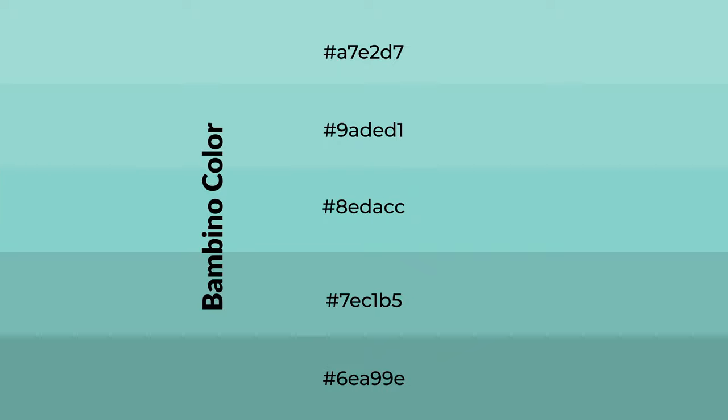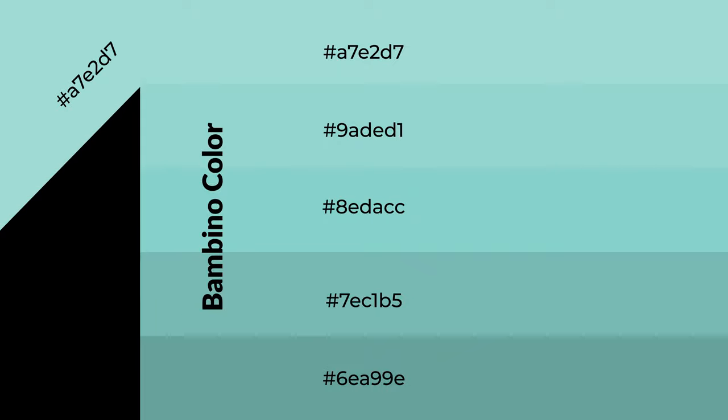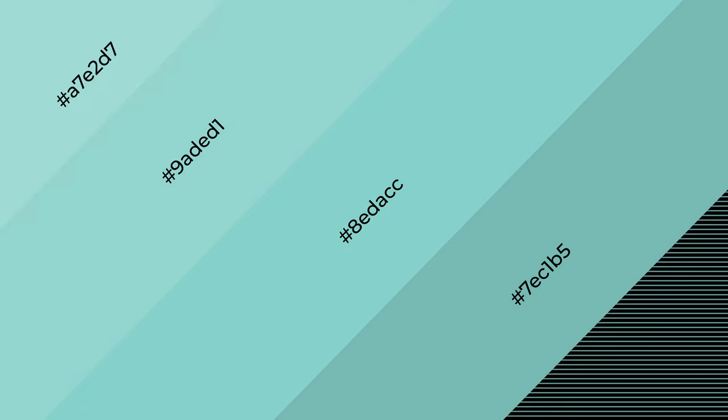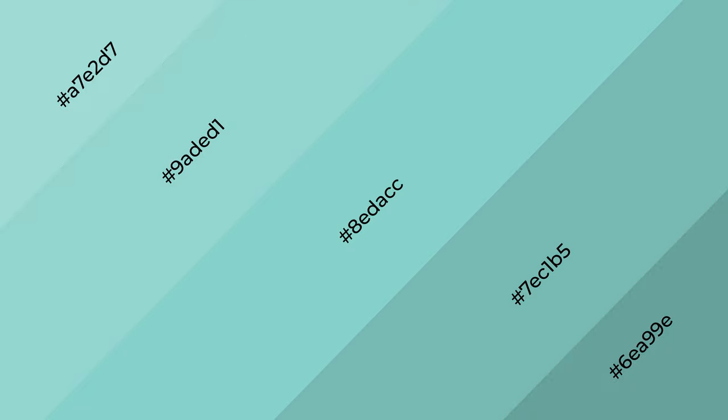To generate shades of a color, we add black to the color. Shades are used in patterns, 3D effects, and layers. Shades create depth and drama.